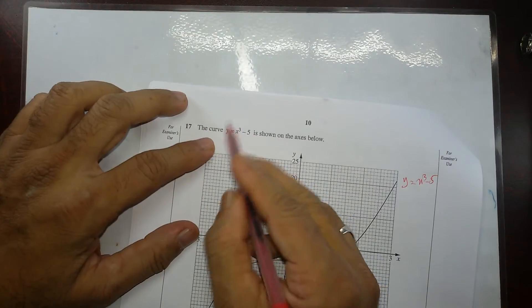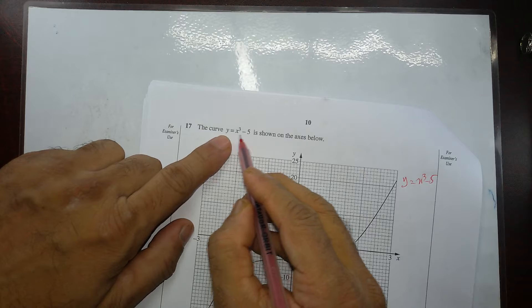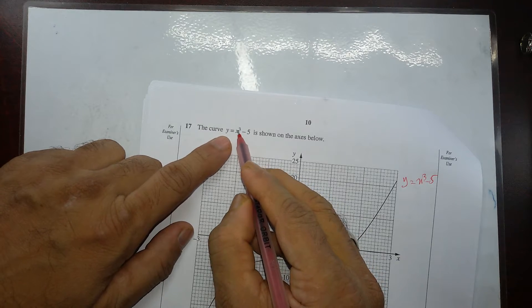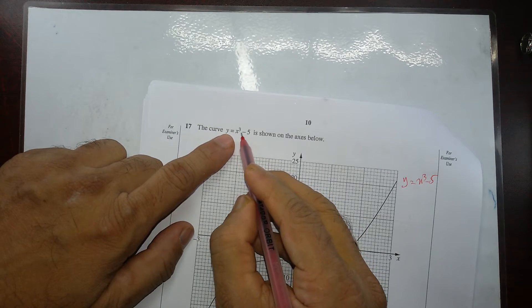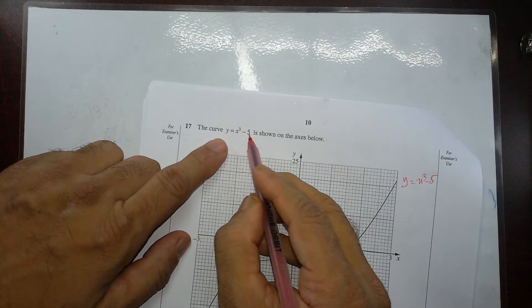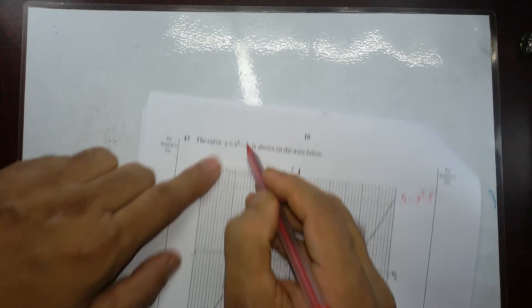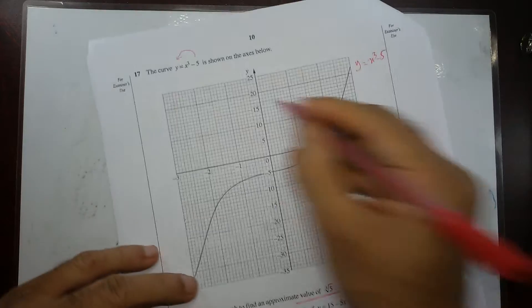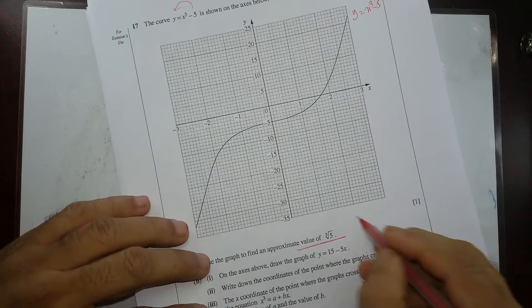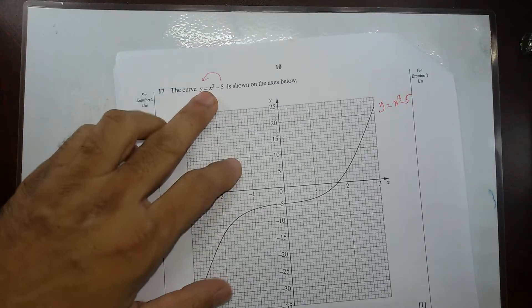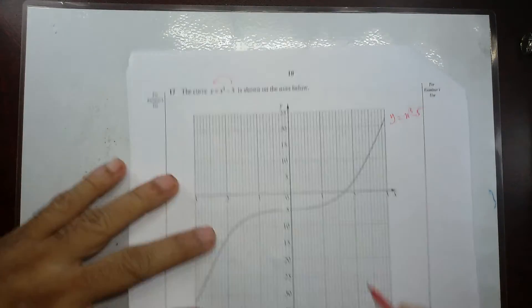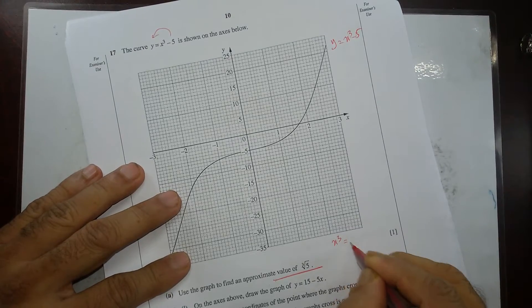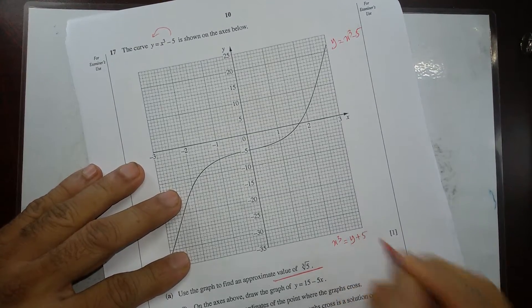If you look at this graph, you can get the cube root when you take the cube root over here. To do that, bring this 5 to that side, so it's going to be x cubed equal to y plus 5.